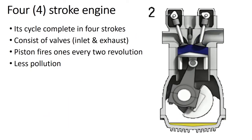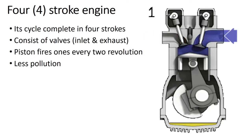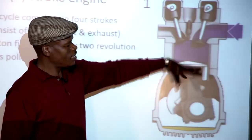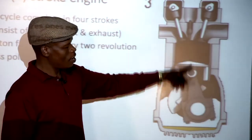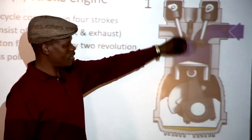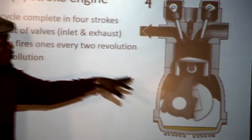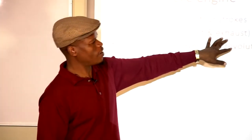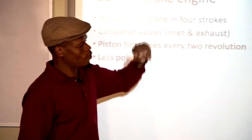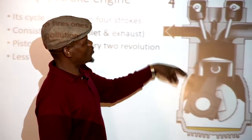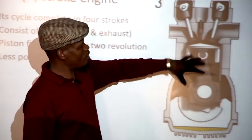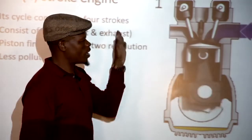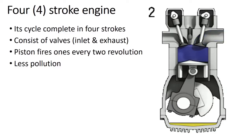For the four-stroke engine, the difference is that it has valves. The piston does not fire every time it goes up — it fires on the second revolution. The first revolution there is no firing; the second one there is firing. It has an inlet valve and an exhaust valve, and its cycle completes in four strokes: intake, compression, combustion (power), and exhaust stroke.